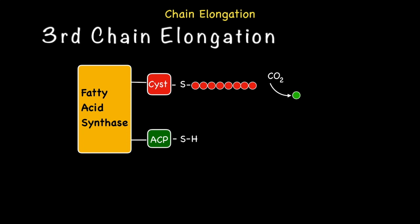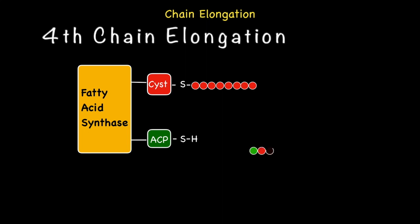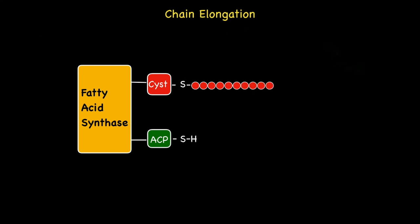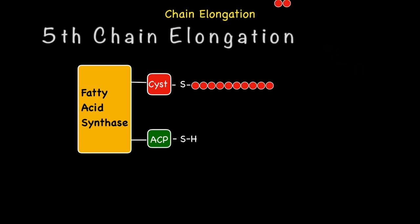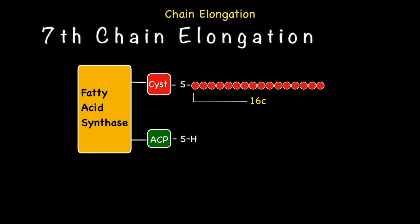So far we've undergone three chain elongations, which has resulted in the production of an 8-carbon fatty acid tail attached to the cysteine residue. During the fourth chain elongation, the process repeats again, and we extend the carbon chain attached to the cysteine residue by a further two carbons, resulting in the elimination of yet another CO2 molecule. This whole process continually repeats, extending the fatty acid chain by two carbon units at a time until a 16-carbon fatty acid is produced. It is at this point that the chain elongation process is terminated.